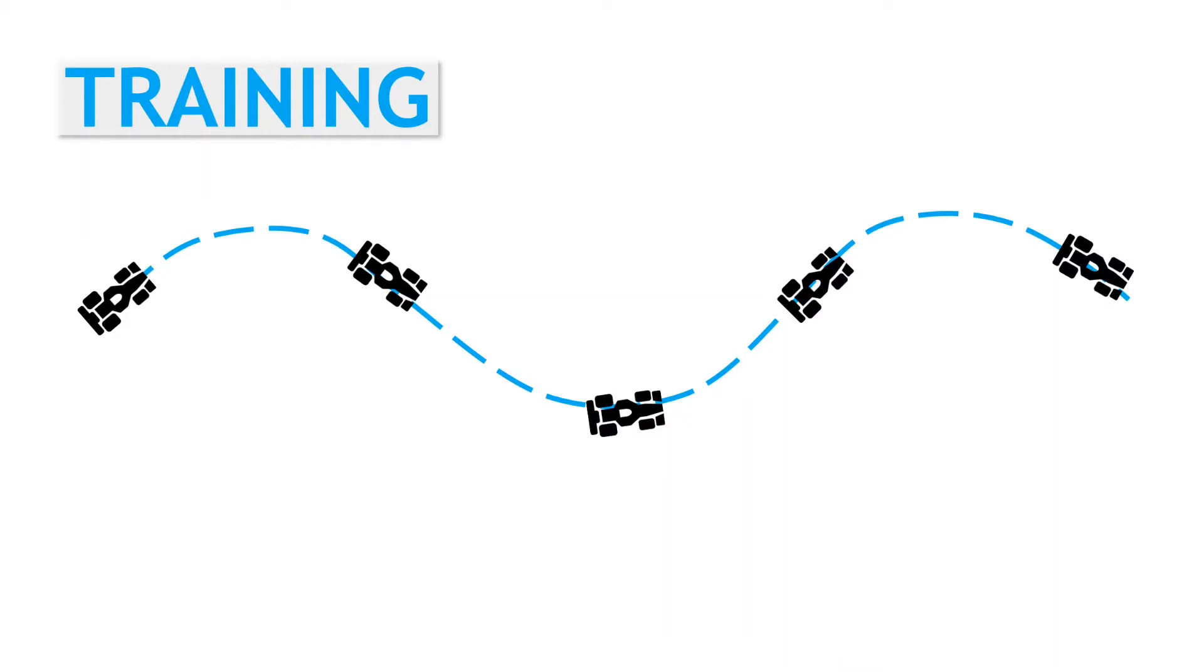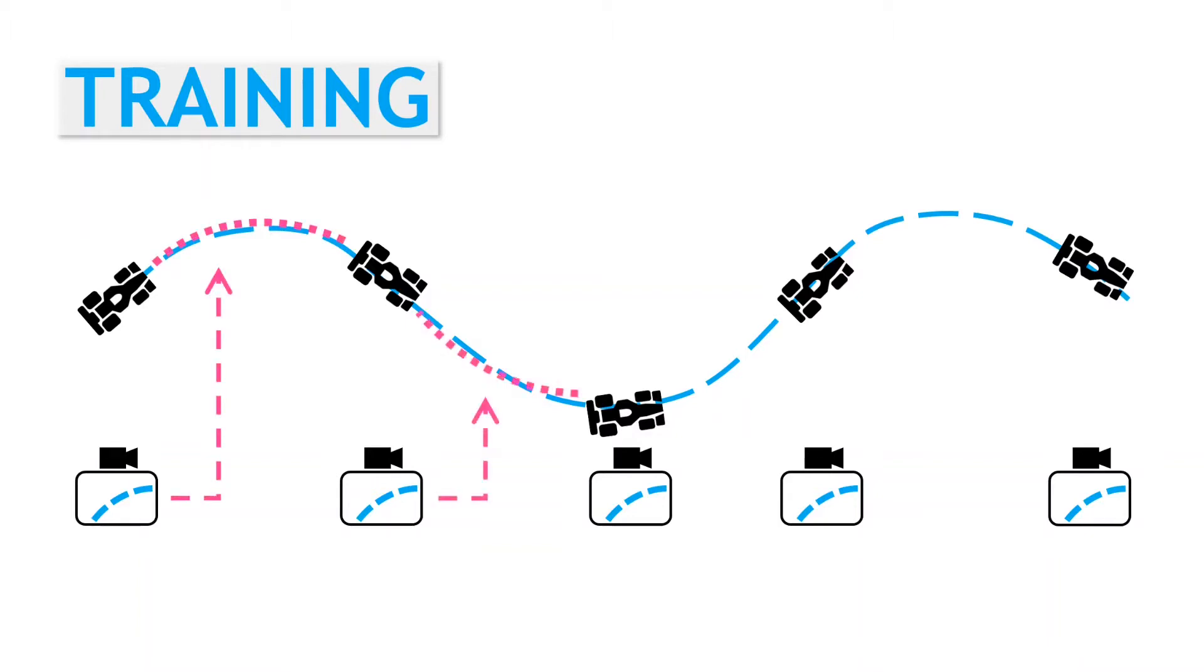So from the driving data, we have the various images as inputs. And we train the policy model to be able to predict, fairly accurately, the next set of steering commands that were used by the expert driver to keep on the track. With enough data, and a good model, we can get pretty accurate predictions.